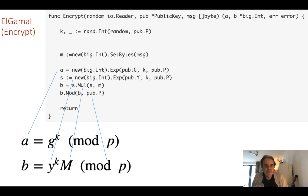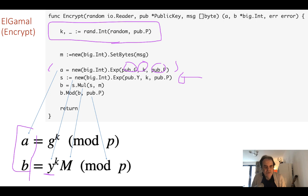So then for the encryption function, just as we've seen before, we're going to generate an A and a B value. This is the A value calculation here, so it's G to the power of K and then mod P. The value of K is taken randomly between 0 and P minus 1. And then we're going to calculate this part here. The first part here is Y to the power of K, so it's this part mod P. And then we're going to multiply that by the message, and then we're going to take mod P at the very end. And then we'll return the values of A and B from the function.